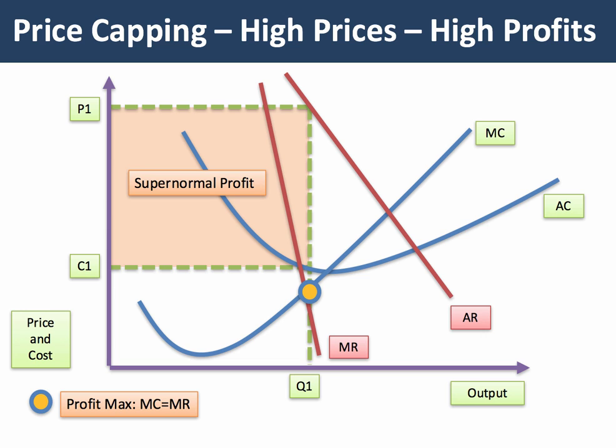Let's take, for example, a situation as shown by the diagram. Here we find the profit maximizing output is Q1 and this monopoly is able to charge price P1 well above the unit cost C1, and they can make a high supernormal profit.